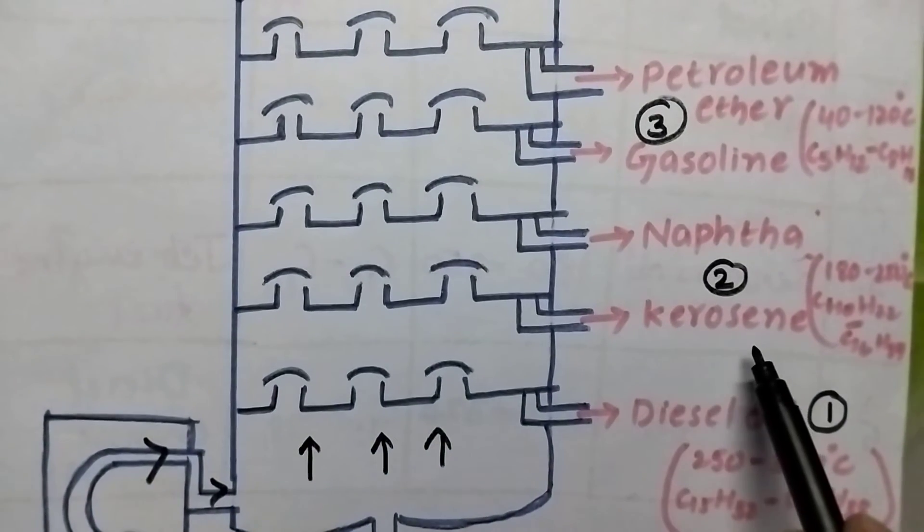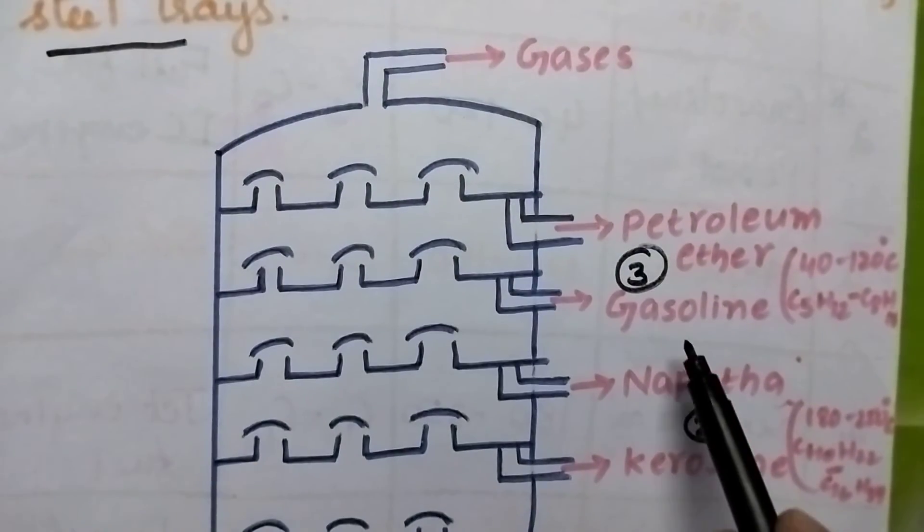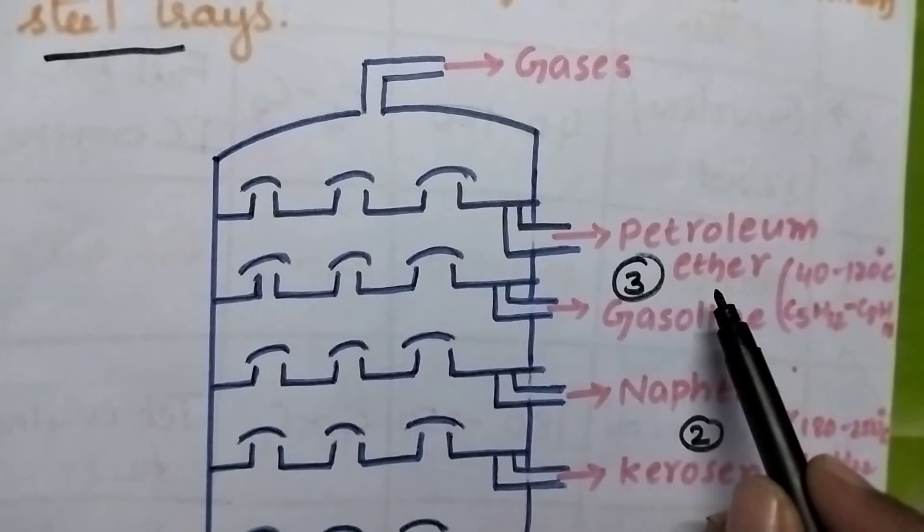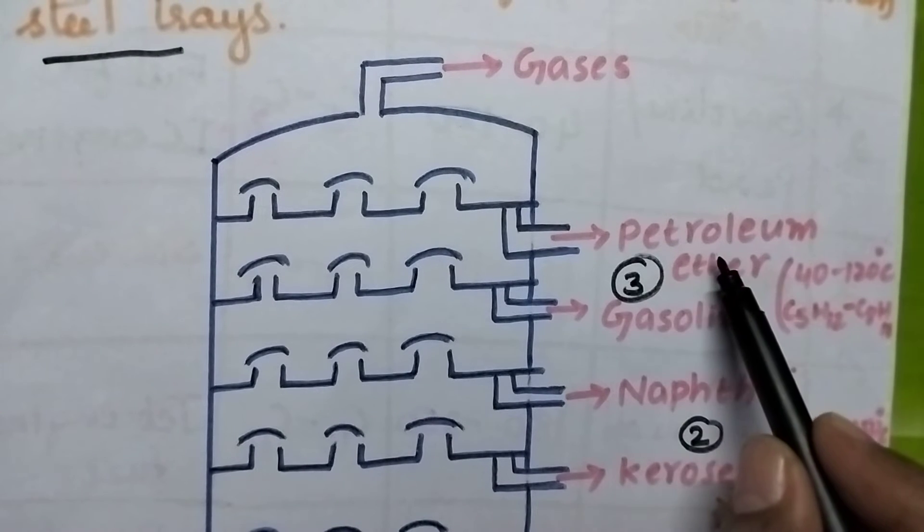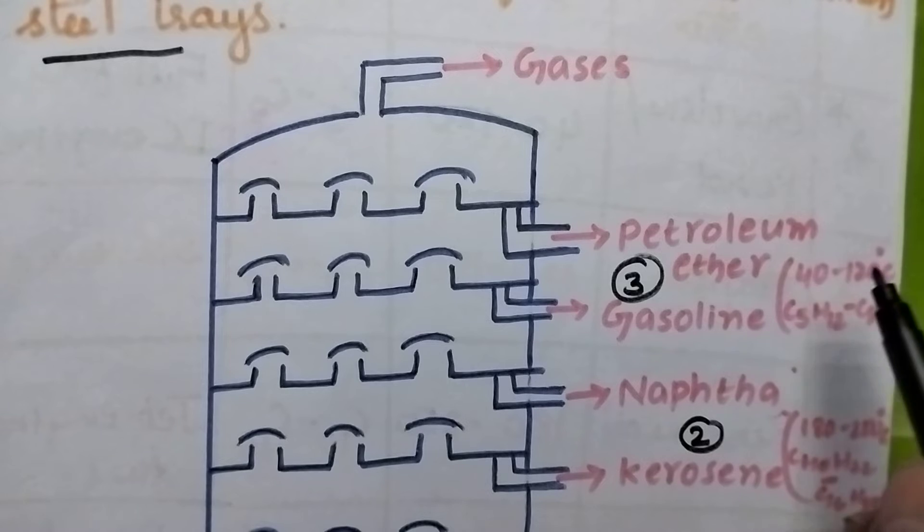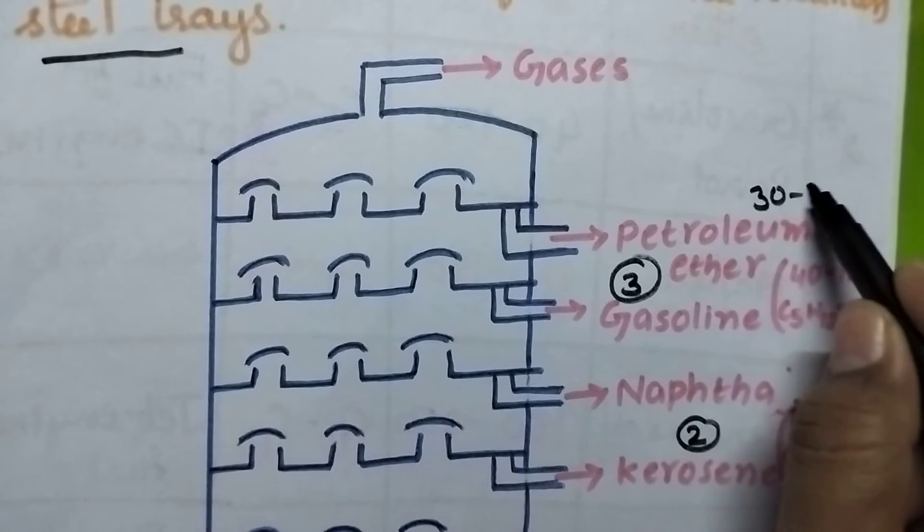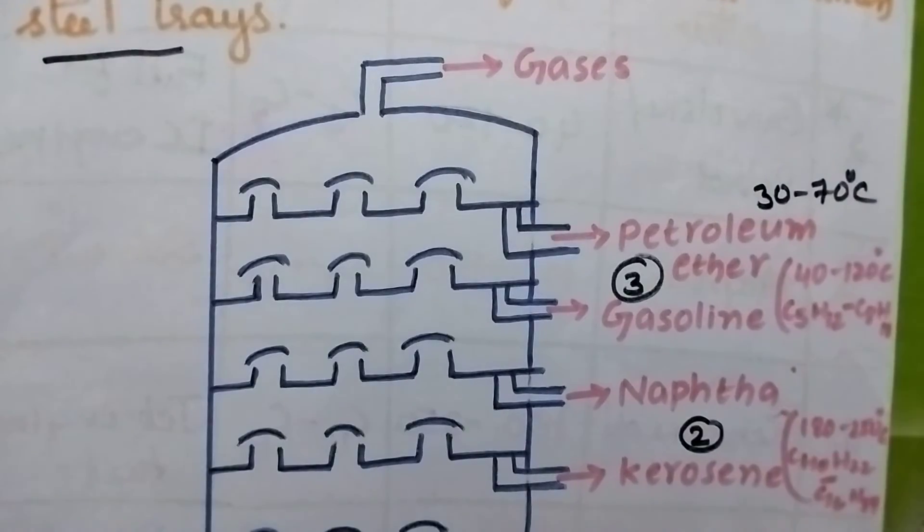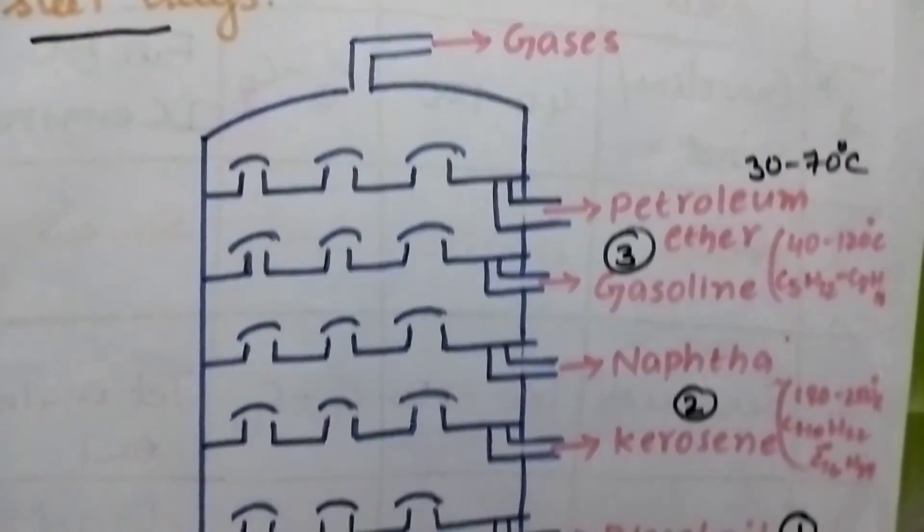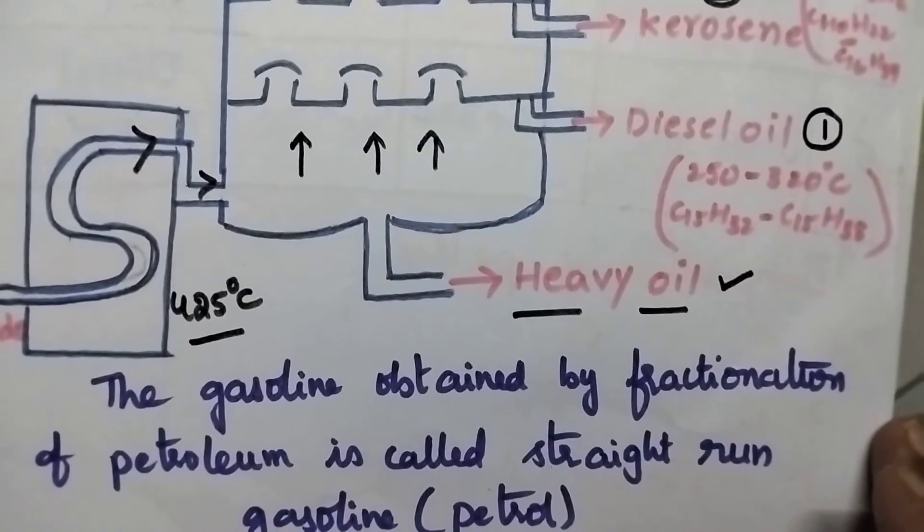Later kerosene oil will be collected, next naphtha, followed by gasoline, and finally it is possible to get petroleum ether having the boiling point of order 30 to 70 degree centigrade.